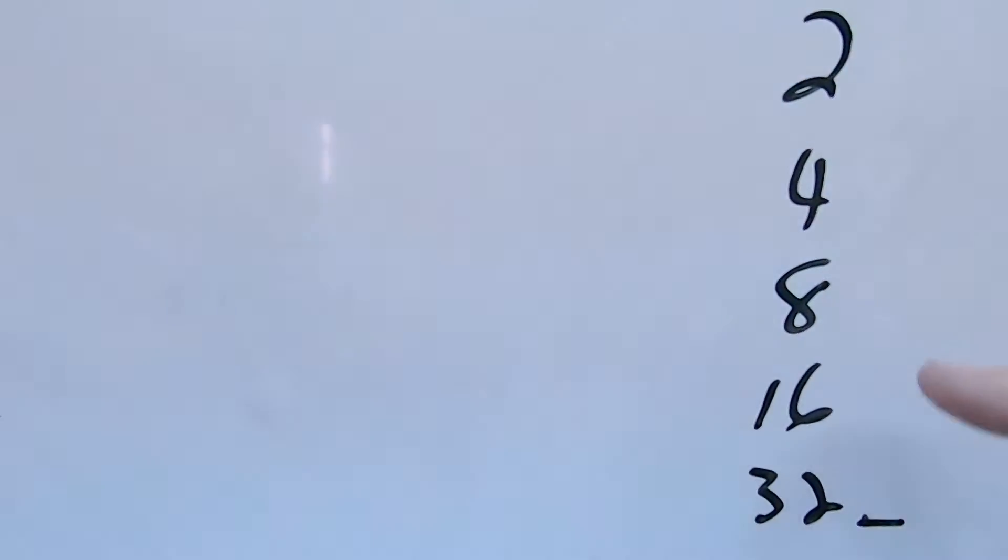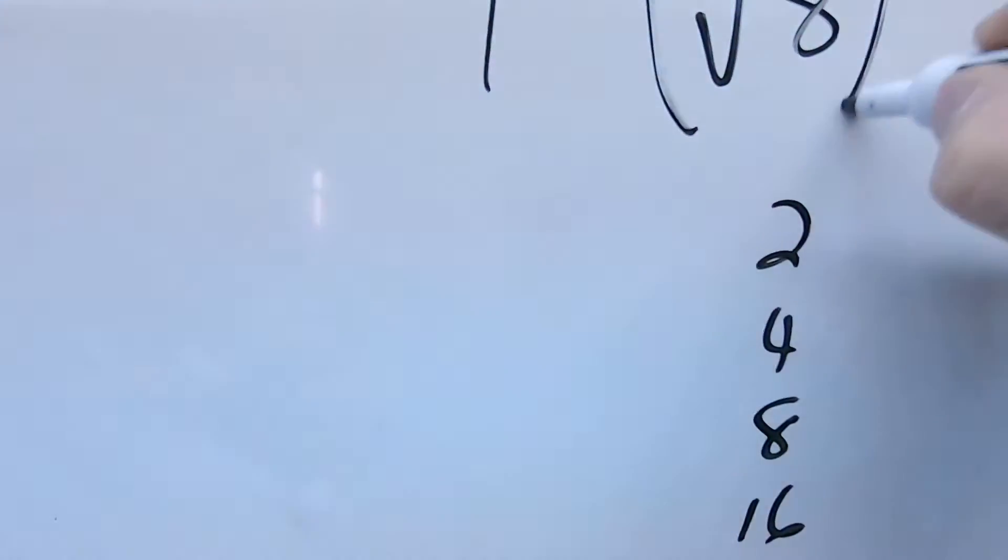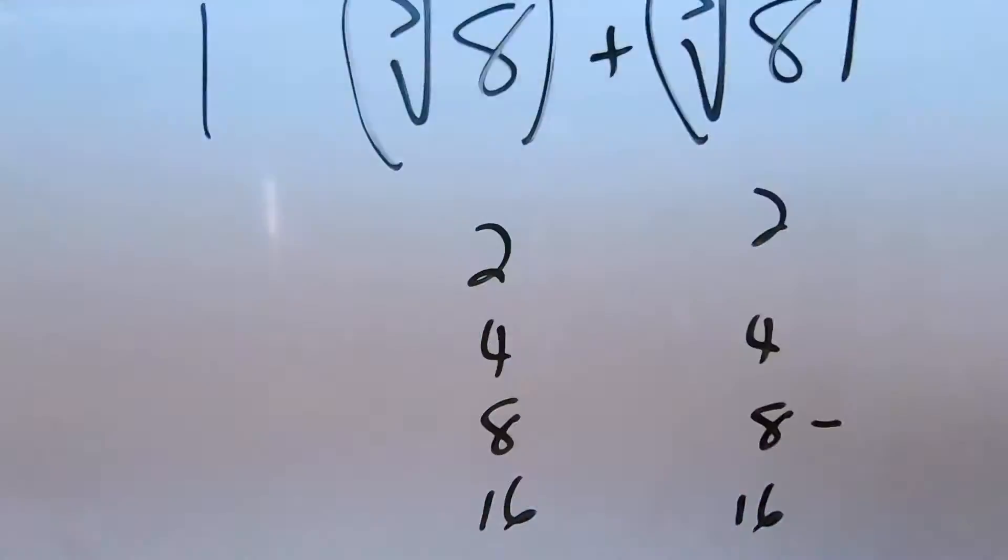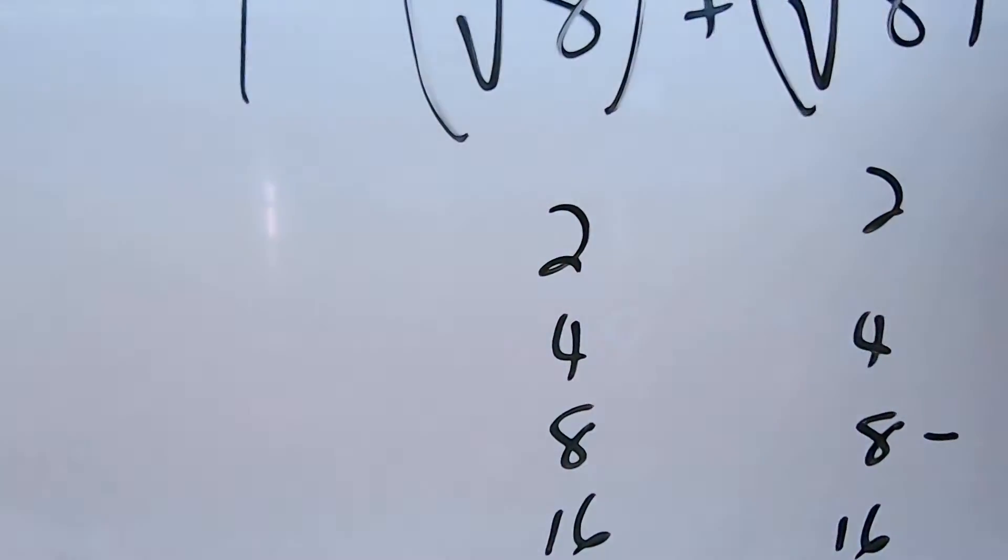We could use the 32 and the 8, which would give us 40. So, 1, 2, 3, 4, 5, this would be to the 5th root, and we'll add on this one to the 3rd root, which would just be 8. We don't even have to do that.